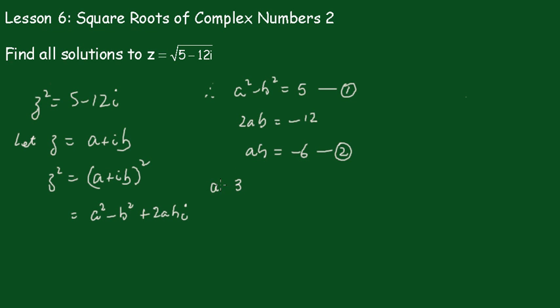So, a equals 3, and let b equal negative 2. 3 times negative 2 is minus 6. So, when I put that back into this one, I see I get 9 minus 4, which is 5. But also, I could have written that as a equals negative 3, and b equals 2. That will also work.